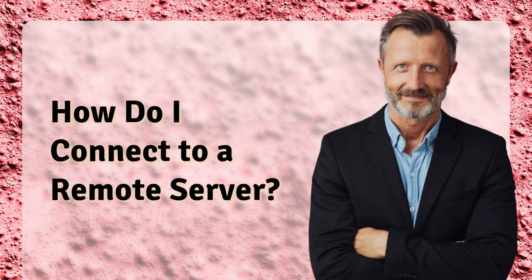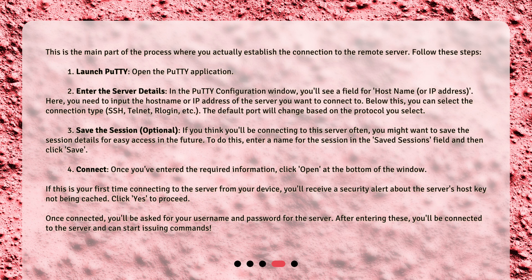This is the main part of the process where you actually establish the connection to the remote server. Follow these steps. Step 1: Launch PuTTY — open the PuTTY application. Step 2: Enter the server details. In the PuTTY configuration window, you'll see a field for hostname or IP address. Here you need to input the hostname or IP address of the server you want to connect to.